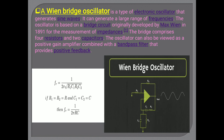The third type is the Wien bridge oscillator. It is a type of electronic oscillator that generates sine waves and can generate a large range of frequencies. The oscillator is based on a bridge circuit, originally developed by Max Wien in 1891 for the measurement of impedances, which is why it is called the Wien bridge oscillator. The bridge comprises four resistors and two capacitors, and the oscillator can be viewed as a positive gain amplifier combined with a band-pass filter that provides positive feedback.